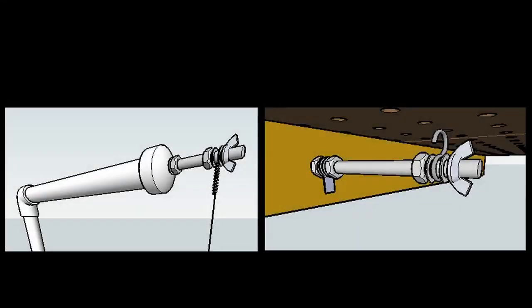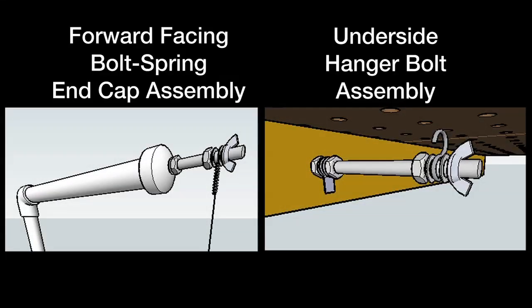The vertical tabletop cutter uses two components for the attachment of nichrome and electrical connection wire. You will need to reference the website for diagrams and videos relating to the forward facing bolt spring end cap assembly and the underside hanger bolt assembly. This video will not reference any diagrams nor tutorials relating to these assemblies. So please reference the website for additional information.